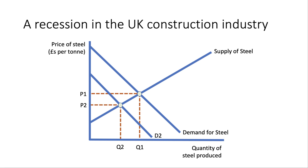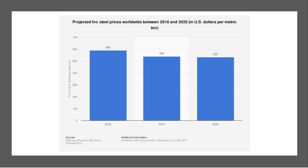Just a few simple examples of what might cause a change in the price of steel. Looking at steel price projections, HRC — hot rolled coil steel — is forecast to fall quite sharply globally, from just under $600 per metric tonne down to just over $530. That's quite a significant fall.